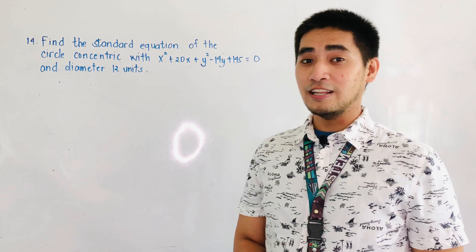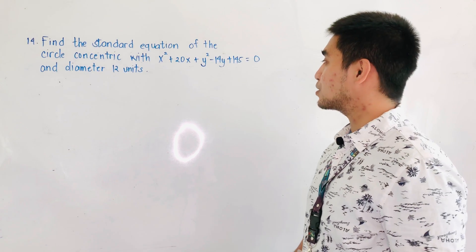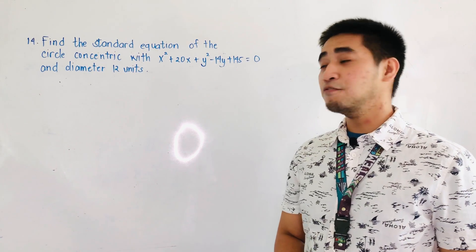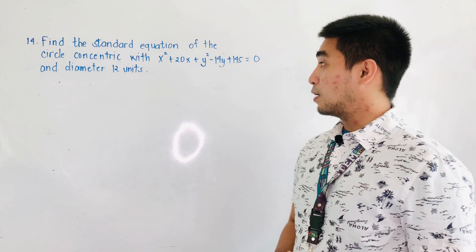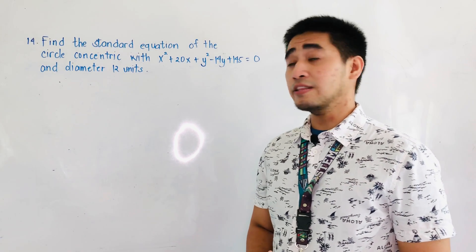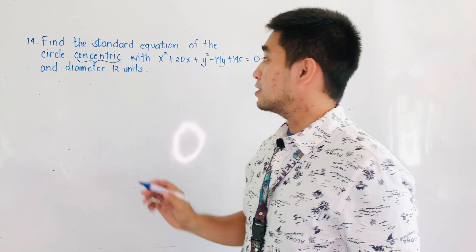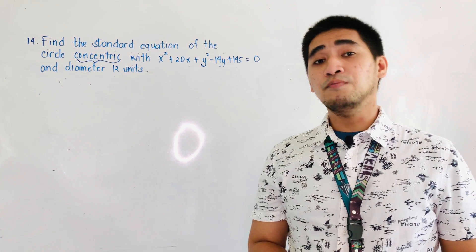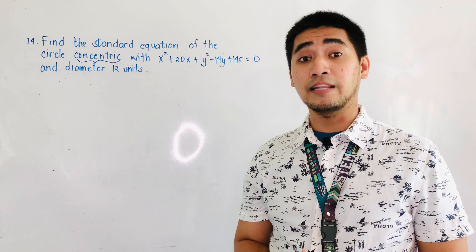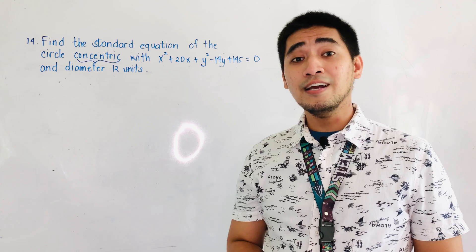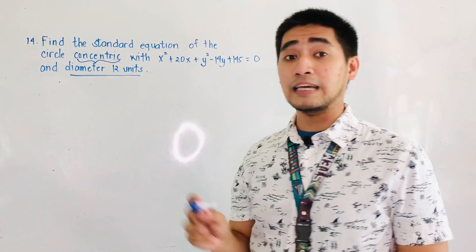Find the standard equation of the circle concentric with x squared plus 20x plus y squared minus 14y plus 145 is equal to 0, and diameter which is 12 units. So if we are given this problem, it is stated that it is concentric.